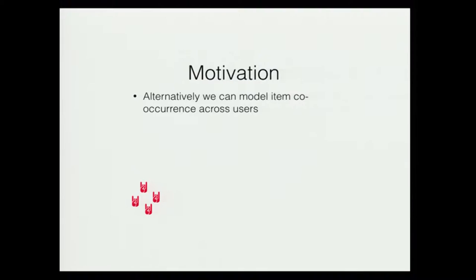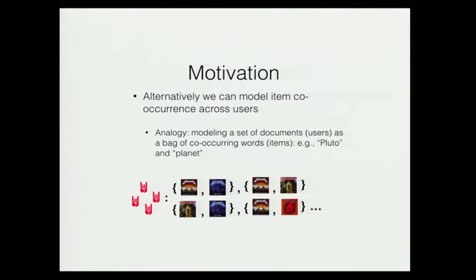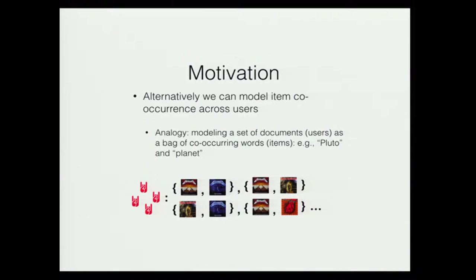Alternatively, we can also model the item co-occurrence patterns across users. For example, if we consider a bunch of users who like to listen to metal music, it would be very reasonable to see a lot of co-occurrence of different metal music in their listening history. To make an analogy to the NLP community, which is where we draw most of the inspiration for this work, this would be equivalent to modeling a set of documents (users) as a bag of co-occurring words (items). If we have a bunch of documents and see the words "Pluto" and "planets" co-occur a lot, then it's very reasonable to assume those documents are probably about astronomy.